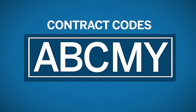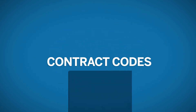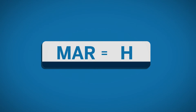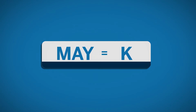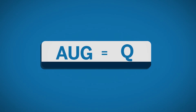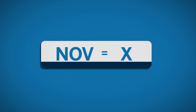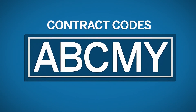For contract expiration, additional characters to the right of the contract code indicate month and year. Each calendar month expiration is identified by a single letter as follows: January F, February G, March H, April J, May K, June M, July N, August Q, September U, October V, November X, December Z. Available contract expiration months may vary by product.